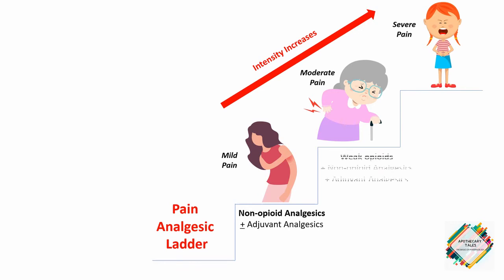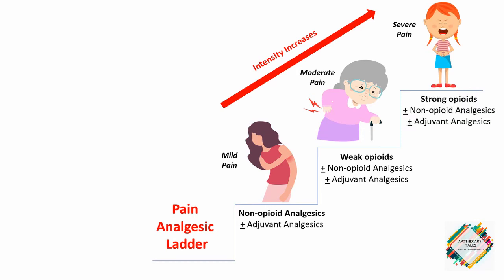For moderate pain, we usually initiate with weak opioids, with or without non-opioid analgesics as well as adjuvant analgesics. Now moving on to severe pain, we initiate strong opioids, with or without non-opioid analgesics as well as adjuvant analgesics. Now moving on to the examples of the different classes of drugs used in this pain analgesic ladder.